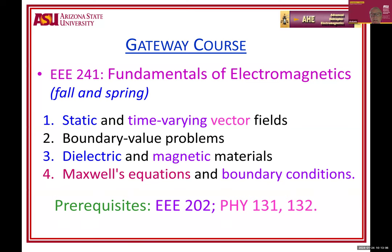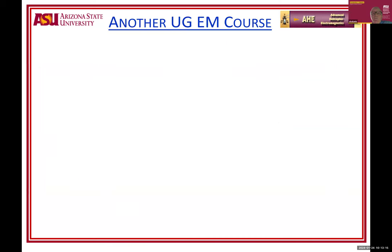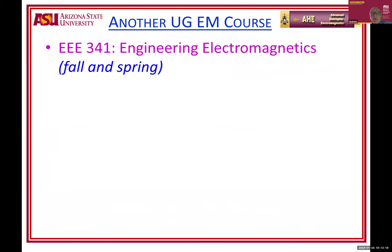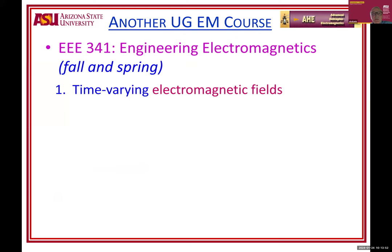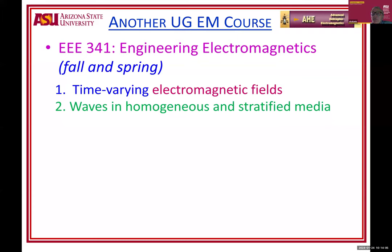The prerequisite again: EEE 202, Physics 131, and the associated lab Physics 132. Other undergraduate courses related to electromagnetics include EEE 341, Engineering Electromagnetics, taught fall and spring, and even summertime sometimes with online classes. This course is primarily devoted to time-varying electromagnetic fields — dynamic or time-varying — dealing with fields, waves, homogeneous and stratified media, transmission lines, waveguides, cavities, resonators, and electromagnetic radiation.